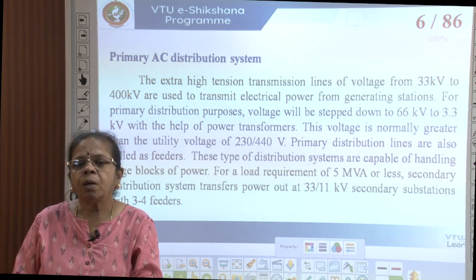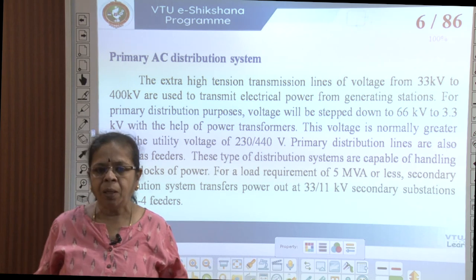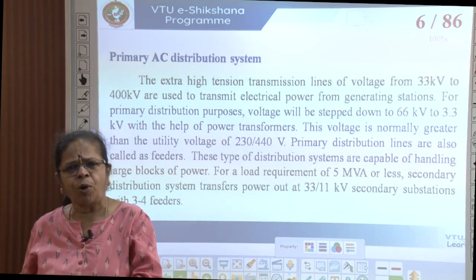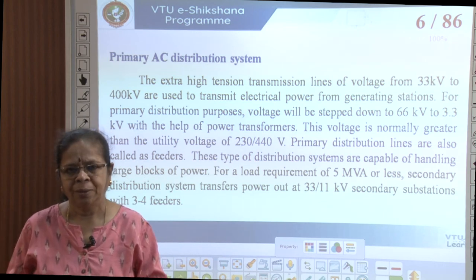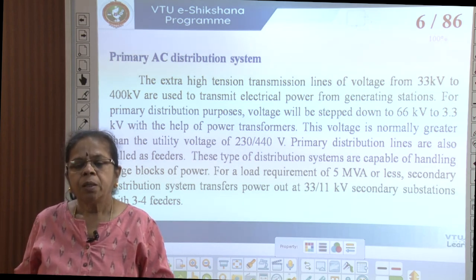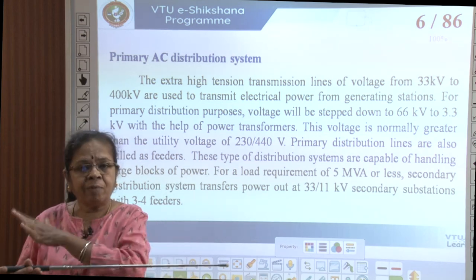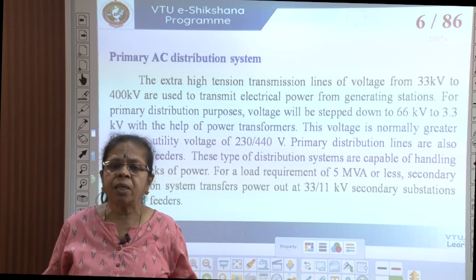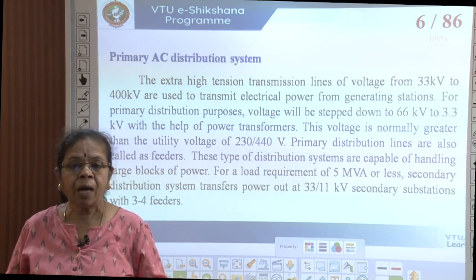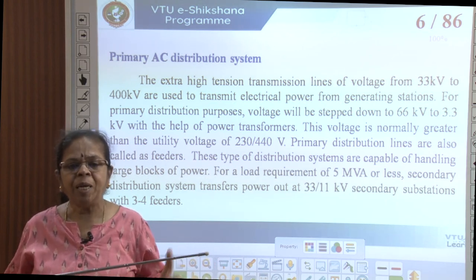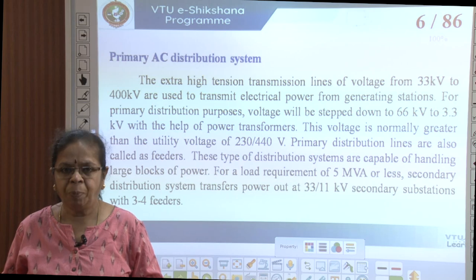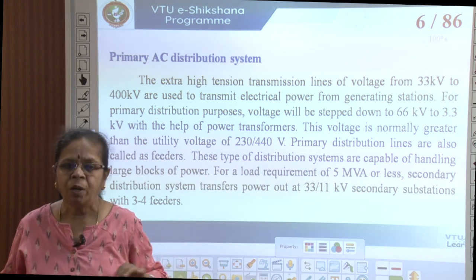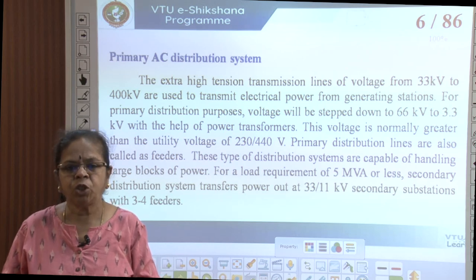At the lowest consumer level, I need between 230 to 440 volts. Sometimes we say 400 volts, 415 volts, or 440 volts — it is a range of voltages permitted. The primary distribution lines are called feeders. Feeders are conductors where there is no tapping in between. From the feeder, power is given to different distributors. Feeders normally carry bulk power from the substation to a local point.